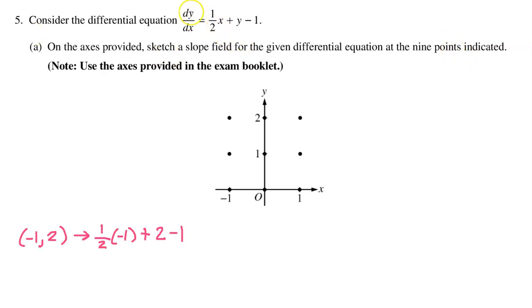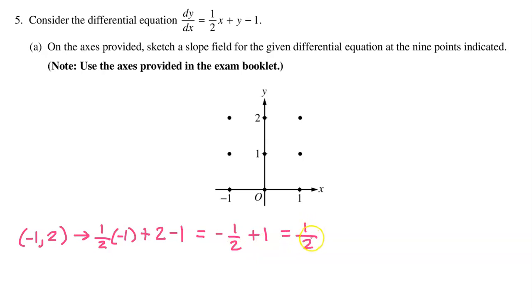The equation for dy/dx will give us the slope at any point. At the point (-1, 2), we have one-half times negative 1 plus 2 minus 1. This gives negative one-half plus 1, which equals one-half. So the slope at this point should be one-half — draw a slope that's increasing, but try to make it less than a 45-degree angle.